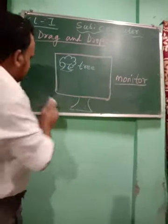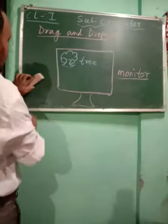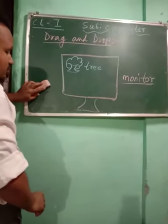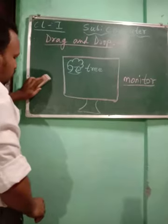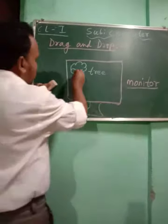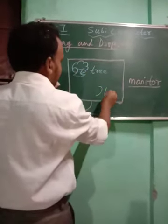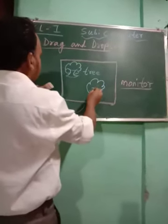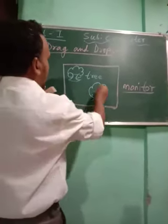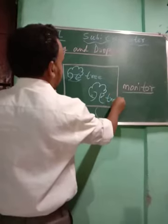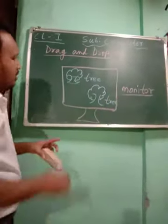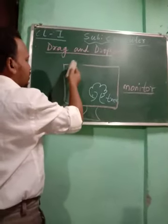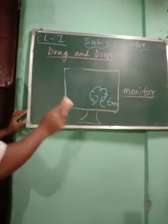So what will happen — this tree will be dragged. You will press the left mouse button, don't leave your finger, and slowly you move the mouse. So slowly this tree will come to the new position. When you come to the desired position, you leave your finger. So automatically this tree will be placed there, and from the original position there will be no tree. So automatically from here you can bring it there — you will drag it.